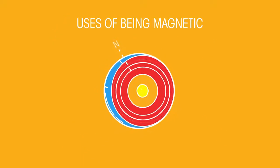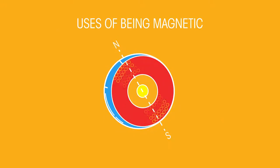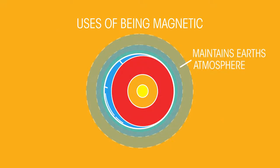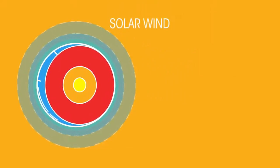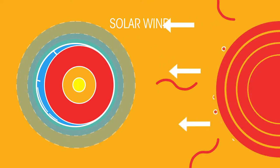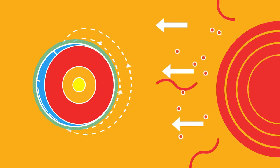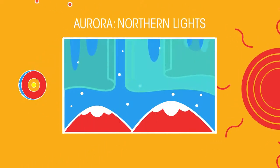So does the Earth being a giant magnet do anything useful? Well, it plays a big part in maintaining Earth's atmosphere. Solar wind is a flow of charged particles coming from the Sun. The Earth's magnetism usually protects the surface of the Earth from these particles, but if some manage to get through, then we could see the aurora, also known as the Northern Lights.